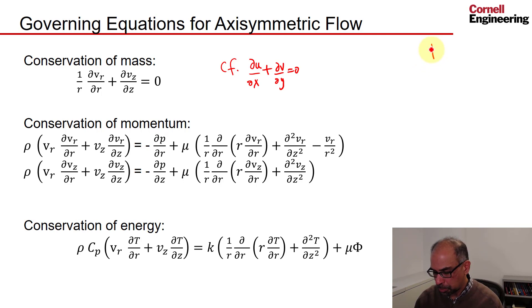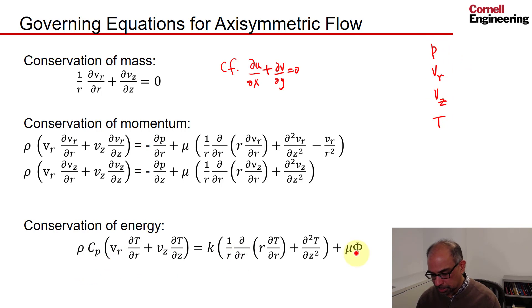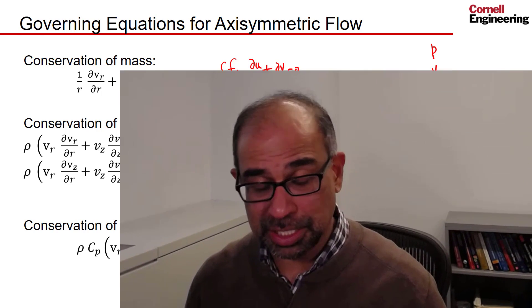The unknowns are pressure, radial velocity, axial velocity, and temperature. Temperature doesn't appear in the mass and momentum equations and density is constant, so we can solve those three equations first to determine pressure and velocity, and then solve the energy equation for temperature. This means the energy equation gets decoupled from mass and momentum when density is constant. In total we have four partial differential equations — solve three first, then one. Now let's take a look at the boundary conditions.